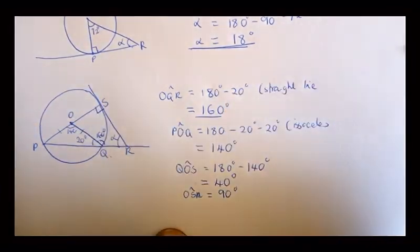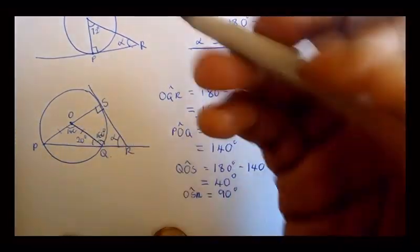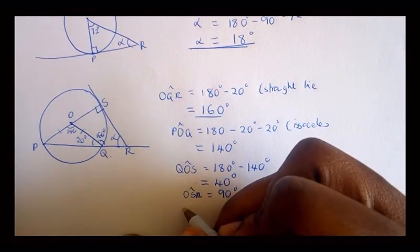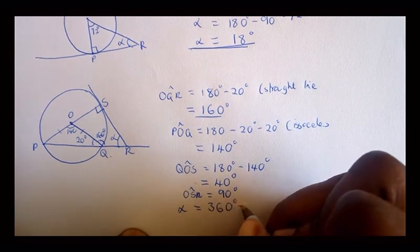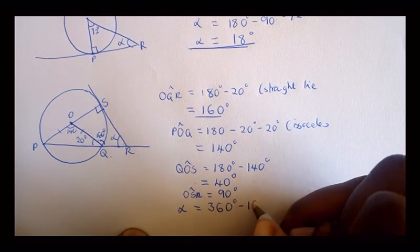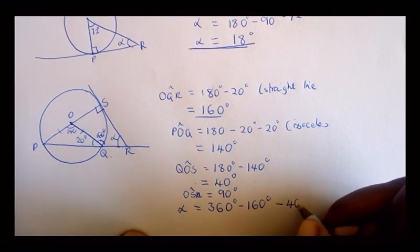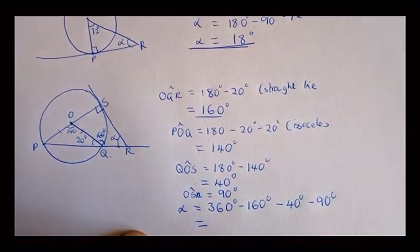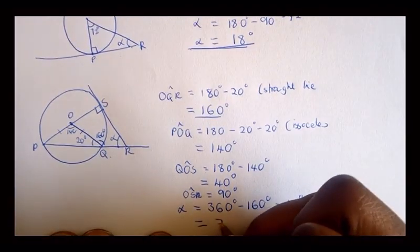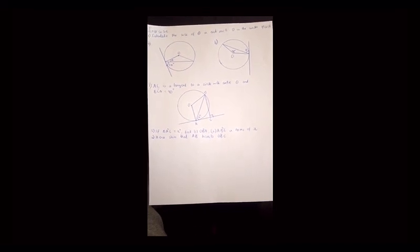Since this is a quadrilateral, its four angles add up to 360 degrees. So alpha equals 360 minus 160 minus 40 minus 90 degrees, which gives alpha equal to 70 degrees. Now let us carry out the exercise on the screen — please pause the screen, carry out the exercise, and then check the solution.